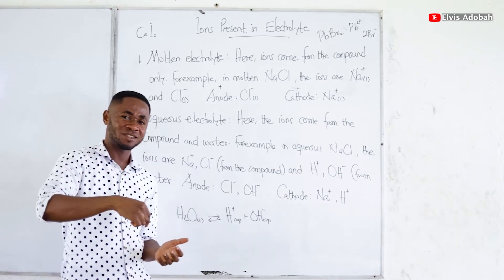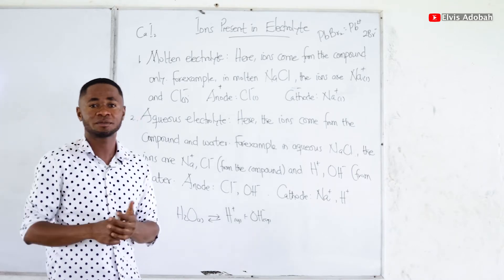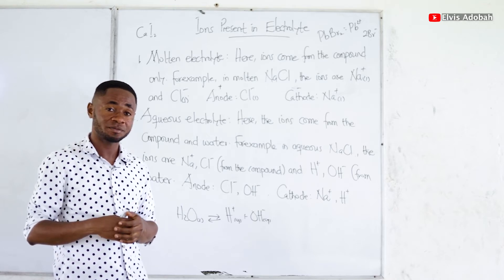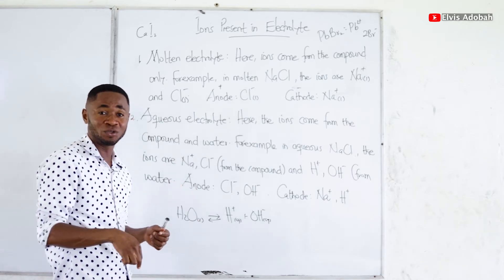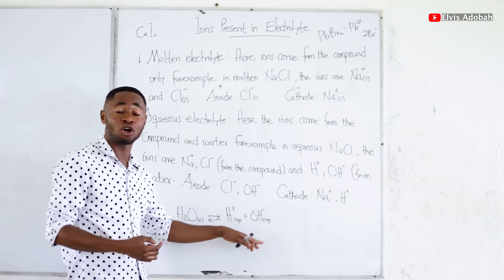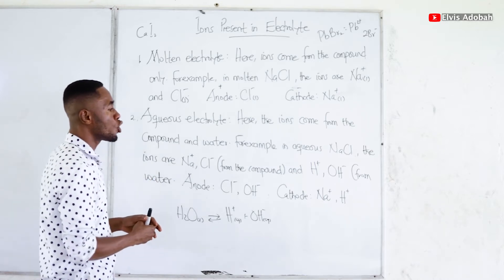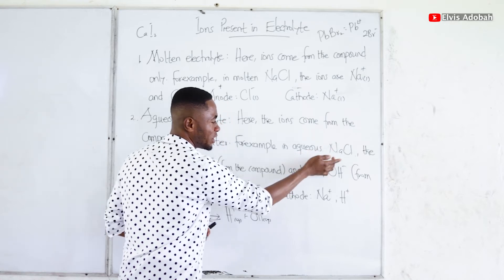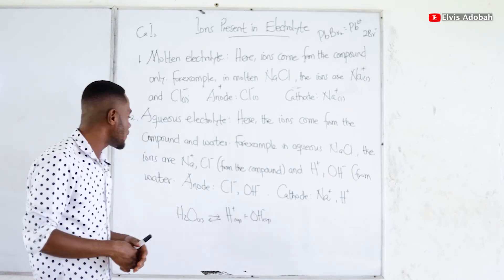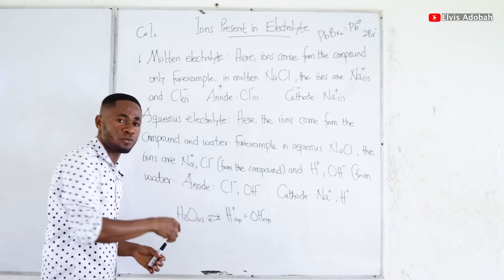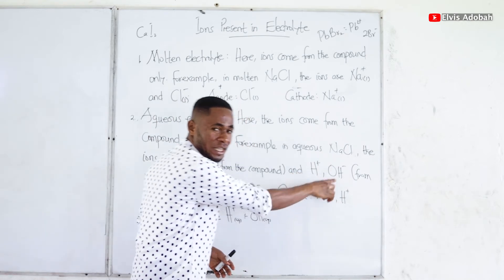So if you add water to a solid or liquid substance which is ionic and dissolve it in the water, what happens is we have ions from that ionic compound in the solution, and we also have hydrogen ions and hydroxyl ions from the water. To apply this, let's look at aqueous sodium chloride. This means we took some common salt, added water, and stirred for it to dissolve. The ions present in the solution are: sodium ions and chloride ions from the sodium chloride, then hydrogen ions and hydroxyl ions from the water.